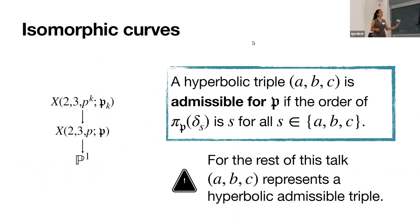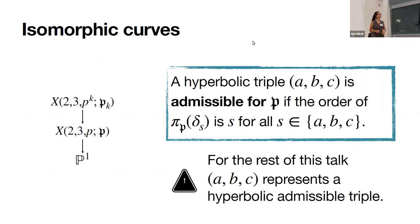What we want to do is define something that fixes this problem. We say that a hyperbolic triple (a,b,c) is admissible for a prime p if the order of each generator of the triangle group under the homomorphism π_p that we defined is exactly s. In these examples, the problem was that the order of delta_{p^k} was just p. So this condition fixes these types of infinitely many examples.